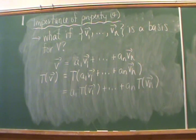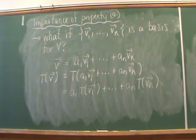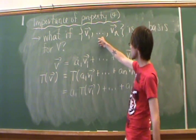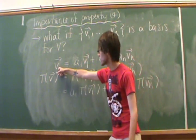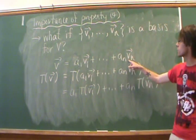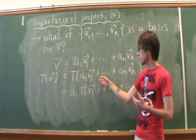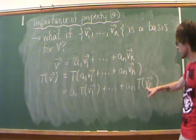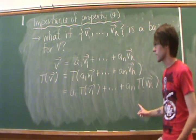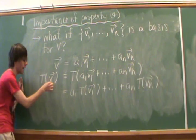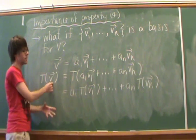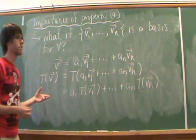Property four might seem silly on the surface, but its real importance comes from what happens when the set v1 through vn is a basis for vector space V. If v1 through vn is a basis for V, those vectors span V, meaning any element v in V can be written as a linear combination of them. Applying T to both sides and using property four, we can break up the expression. This tells us that if we want to evaluate T of any vector in V, all we really need to know is how T acts on a basis for V.